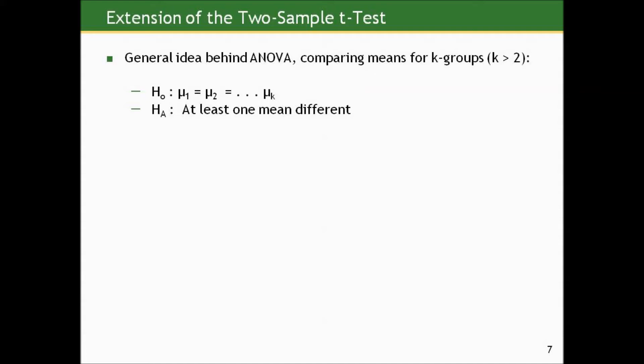In our example with smoking and respiratory health, there were six groups, so k would be six. And the null in ANOVA is that all the group means are equal: mu1 equals mu2 equals mu3 equals mu k. And the alternative is that at least one mean is different.